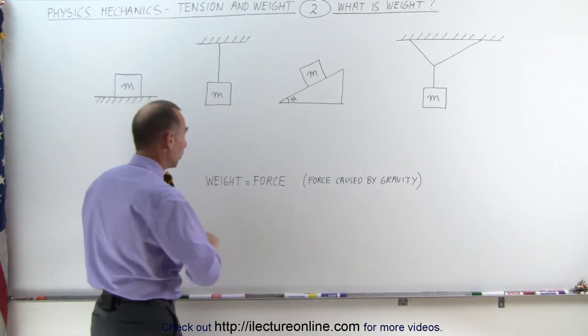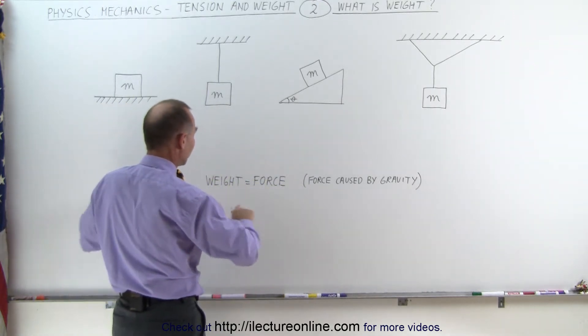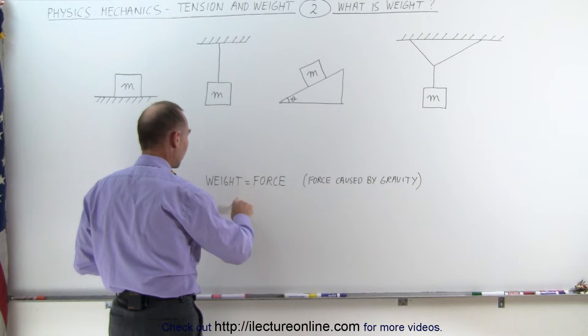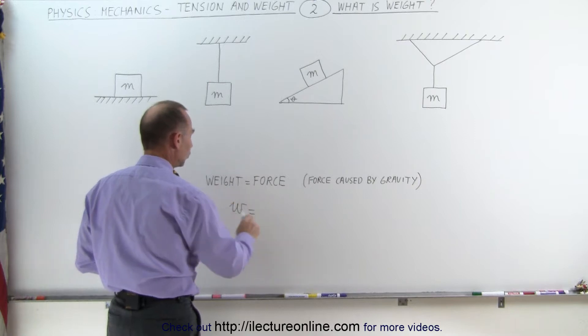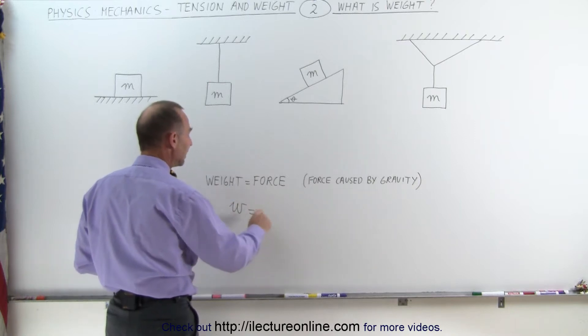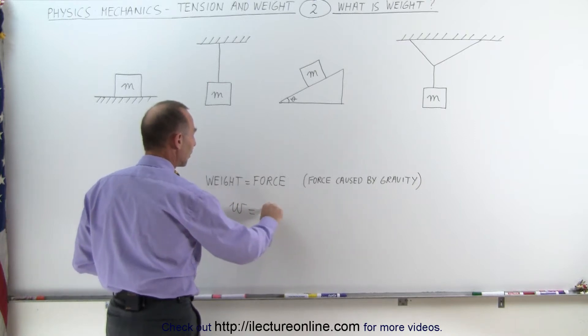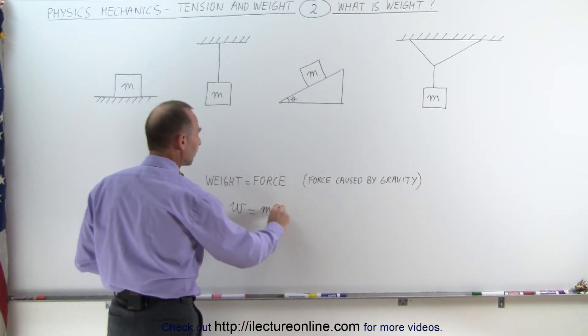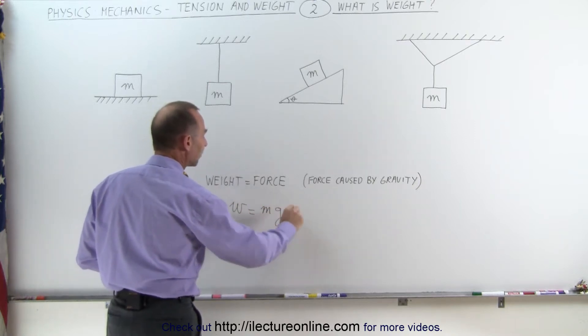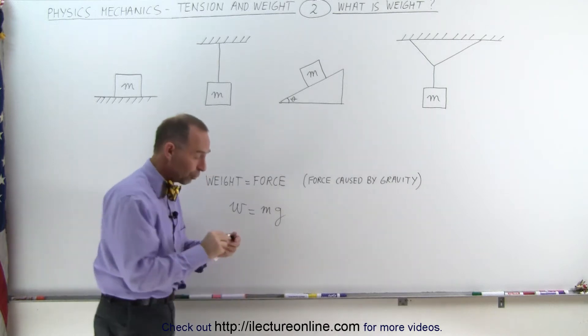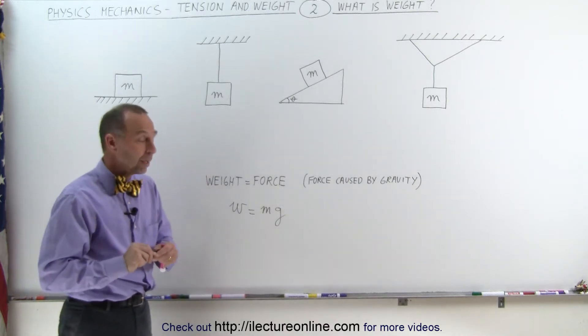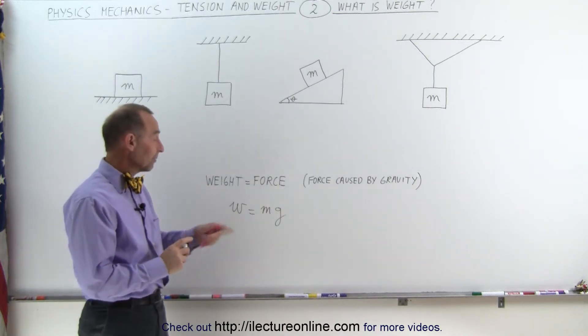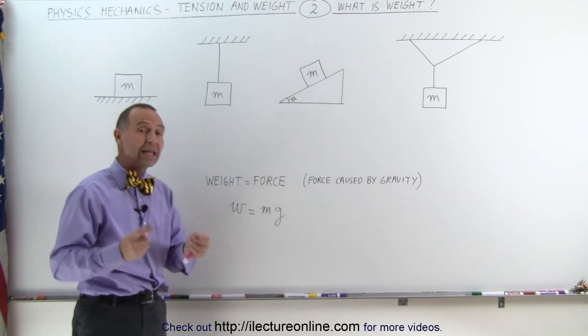The equation we use for that is the letter W to indicate weight, and it's equal to the product of the mass of an object times the acceleration due to gravity. The mass can never change.